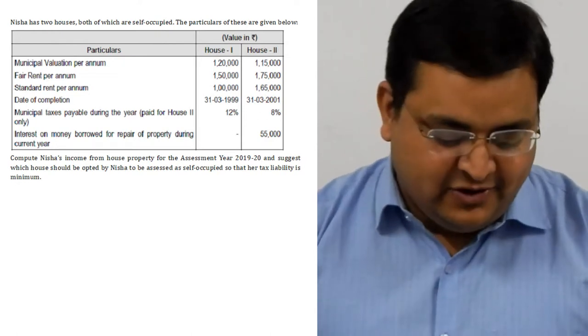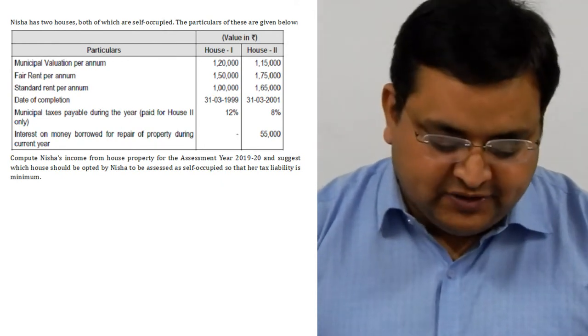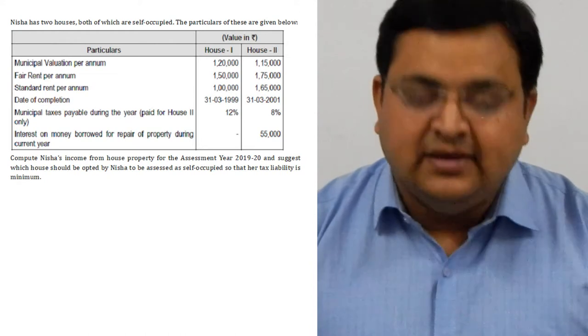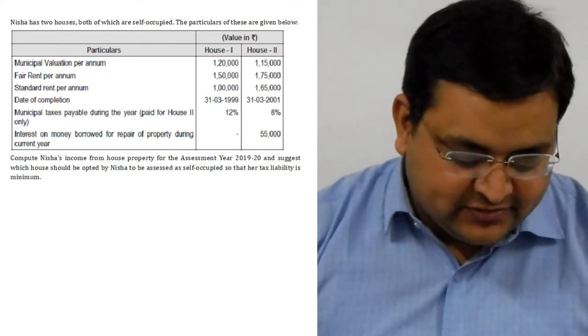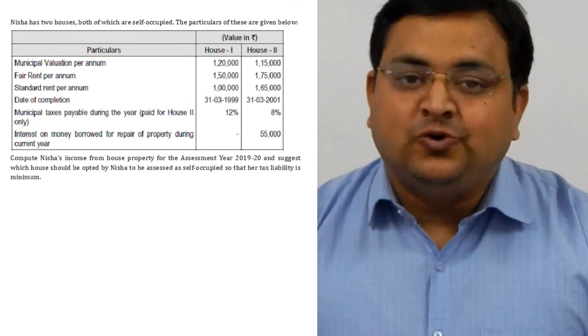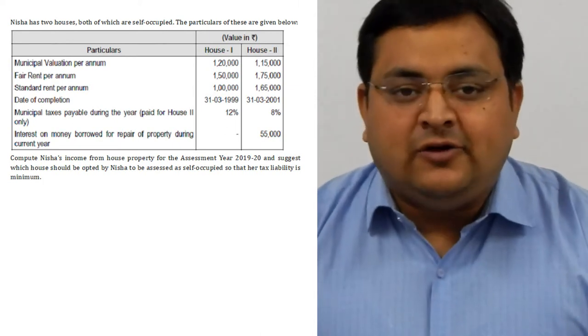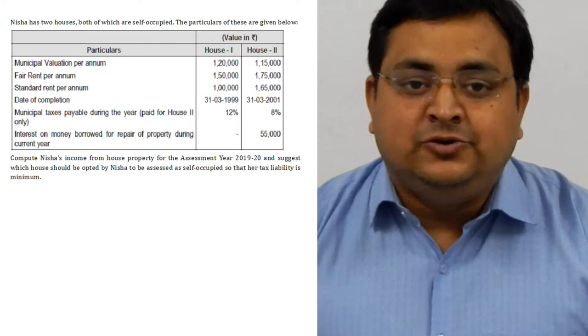Compute Nisha's income from house property for the assessment year 2019-20 and suggest which house should be opted by Nisha to be assessed as self-occupied so her tax liability should be minimum. You have two houses and both are self-occupied. One will be self-occupied and the other will be deemed let out.